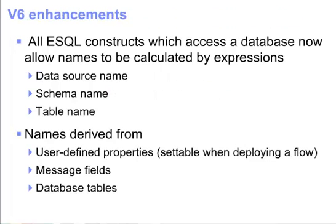In WebSphere Message Broker v6, all ESQL constructs which access a database now allow the data source, schema, and table names to be calculated by expressions. These names can be derived from user-defined properties settable when deploying a flow, from message fields, from database tables, or from any other source.